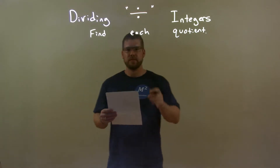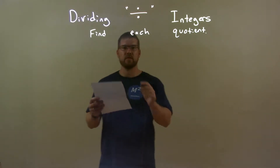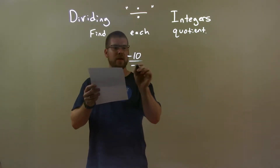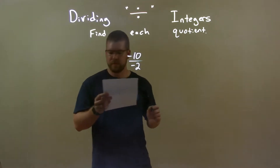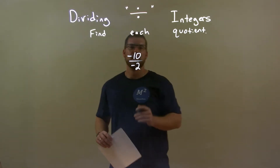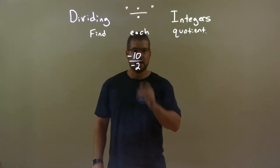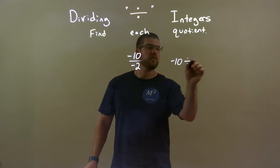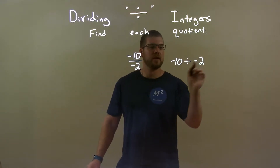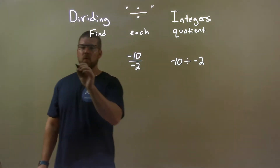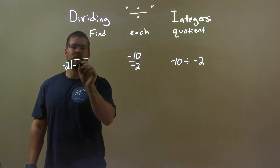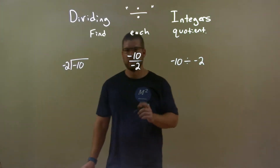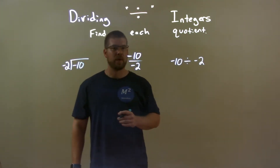So, if I was given these integers — negative 10 over negative 2 — so negative 10 divided by negative 2. Another way to write that: negative 10 divided by negative 2, or negative 2 goes into negative 10. Either way, same question.